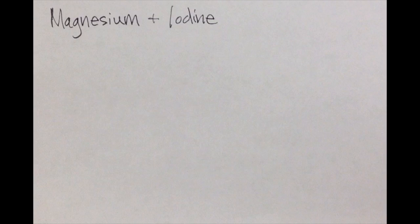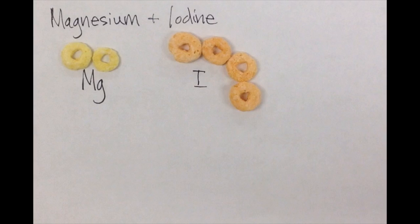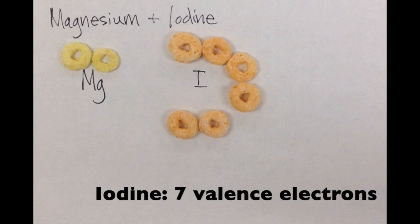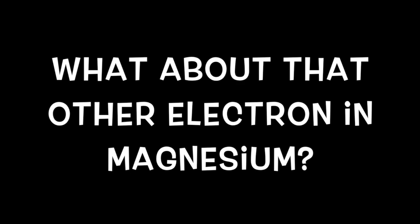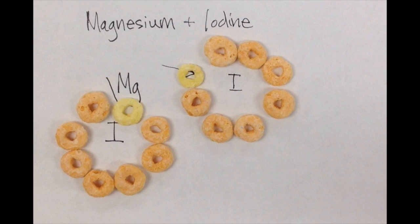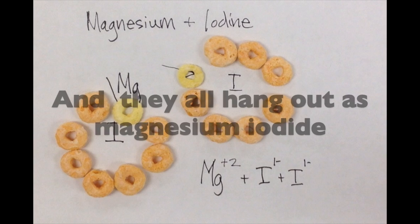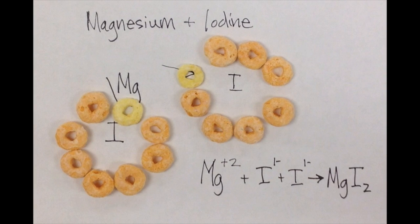Magnesium and iodine are similar, but there's a little twist to this. Magnesium has two valence electrons and iodine has seven valence electrons. Magnesium gives one of its electrons, but what about that other electron? Another iodine atom is available to take the other electron. This is magnesium iodide — one magnesium atom and two iodine atoms.